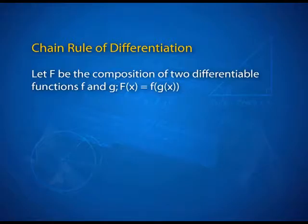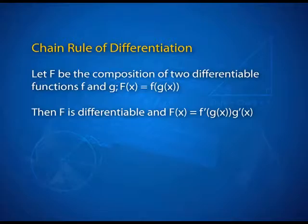The chain rule is a rule for finding the derivatives of a composition of two or more functions. Here is the rule without proof. If F is a composition of two differentiable functions f and g, that is capital F of x equals f of G of x, then capital F is differentiable and its derivative is the product of the derivative of G and the derivative of f at G of x. So it is the same as f′(G(x)) times G′(x).